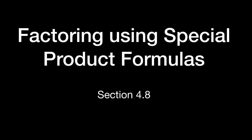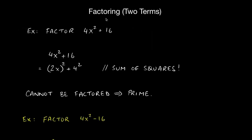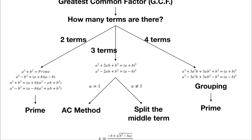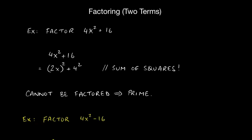Welcome to section 4.8. In this section we'll talk about factoring using those special product formulas. We're going to be factoring binomials — expressions that have two terms. Once you've dealt with the GCF, if there are two terms, there are four formulas to try. If none of them work, we declare the expression to be prime.